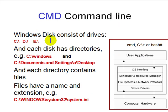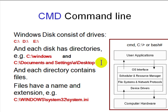Before we can use CMD we need to understand how Windows organizes files. Windows uses disk drive letters A, B, C, D to put all the folders in. Each disk has directories or folders. One difference between Unix and Windows is that on Windows you will see folders with spaces, like 'Documents and Settings'. A desktop folder belongs to a username, and files are basically where you store your text or data.